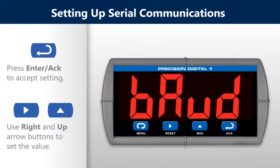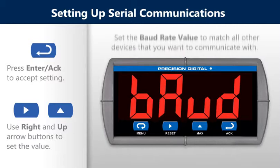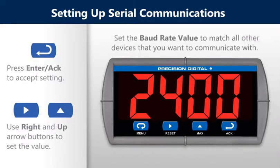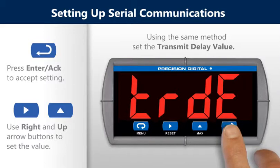Using the baud menu, set the baud rate value to match all other devices that you want to communicate with. Use the same method for setting the value. Using the same method, set the transmit delay value.